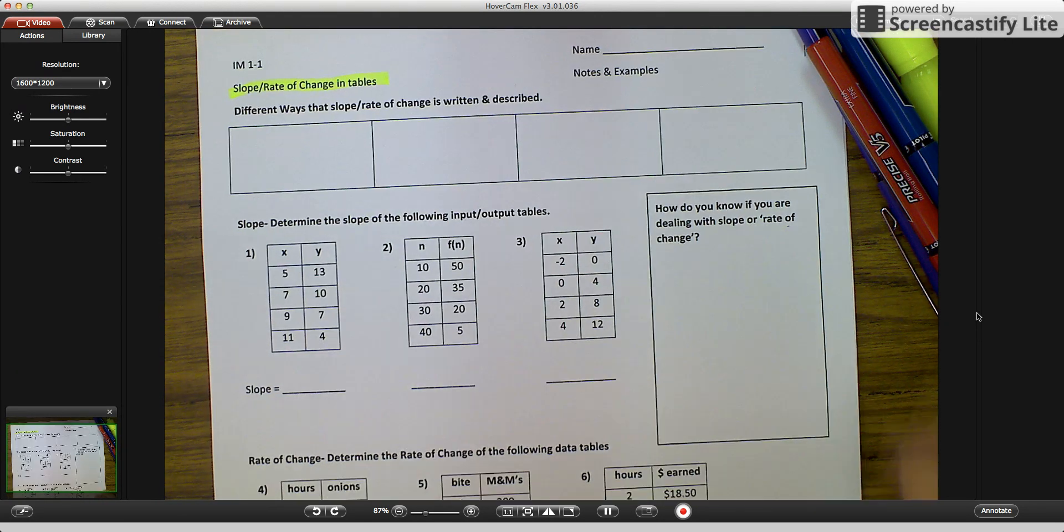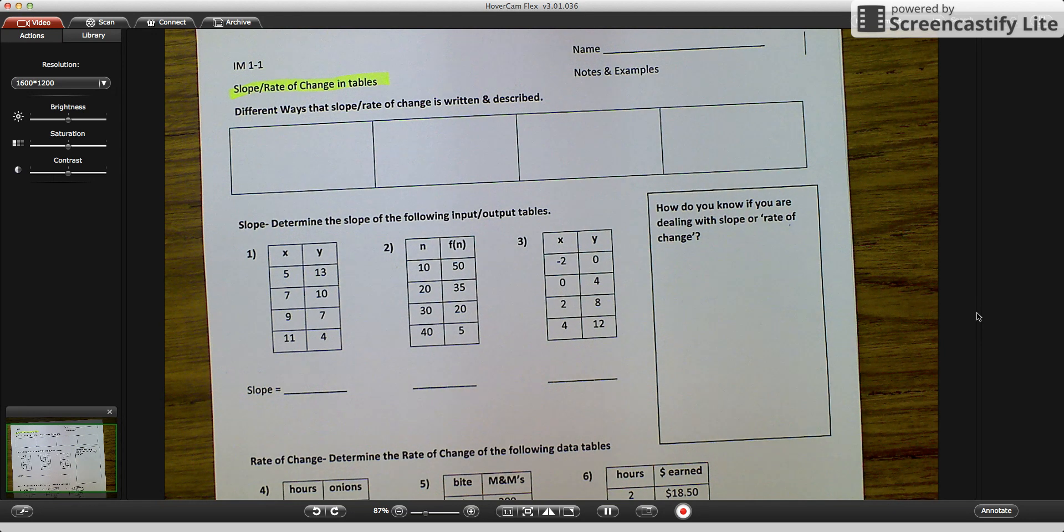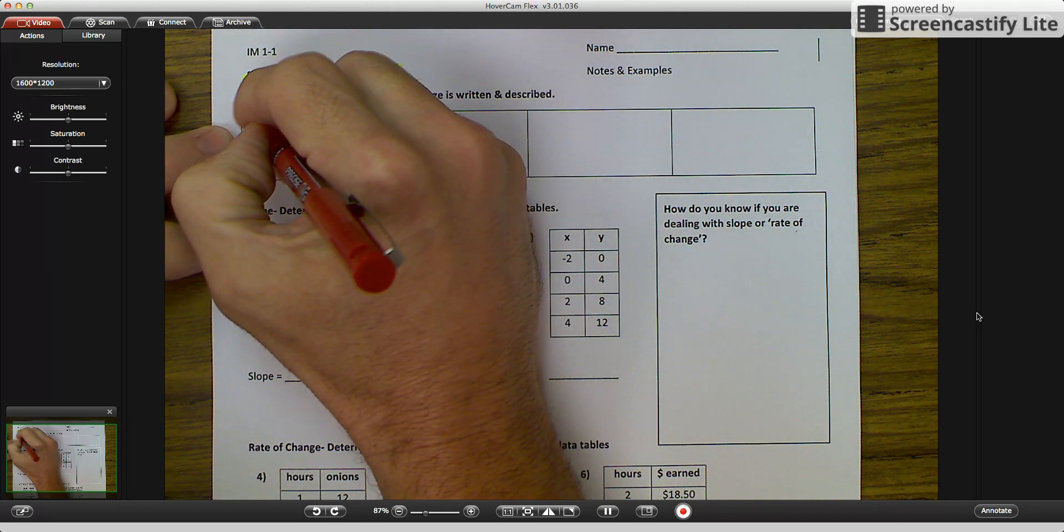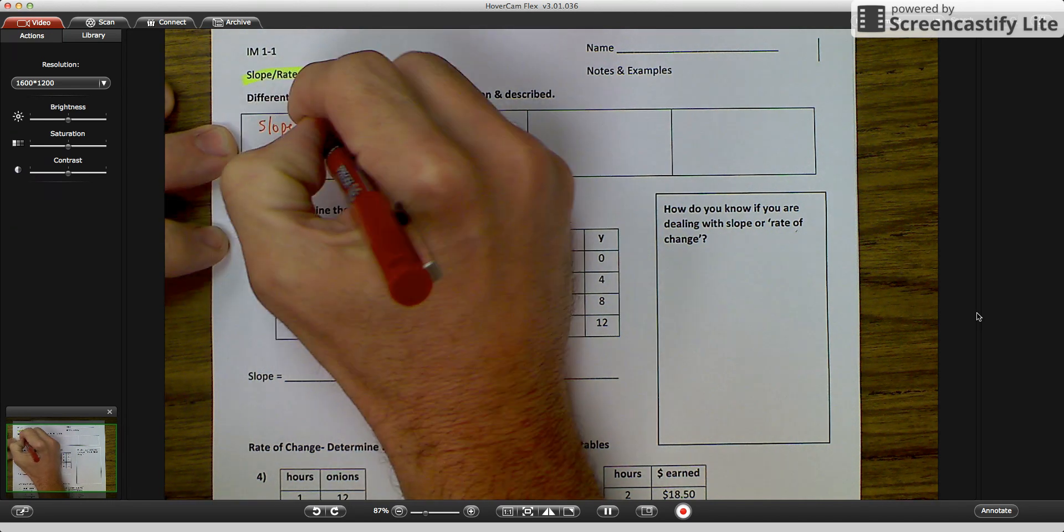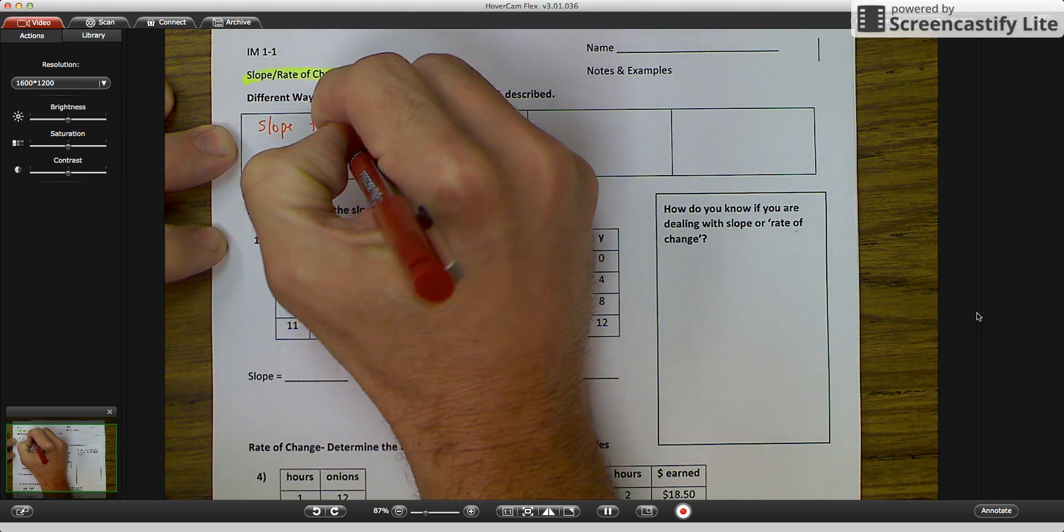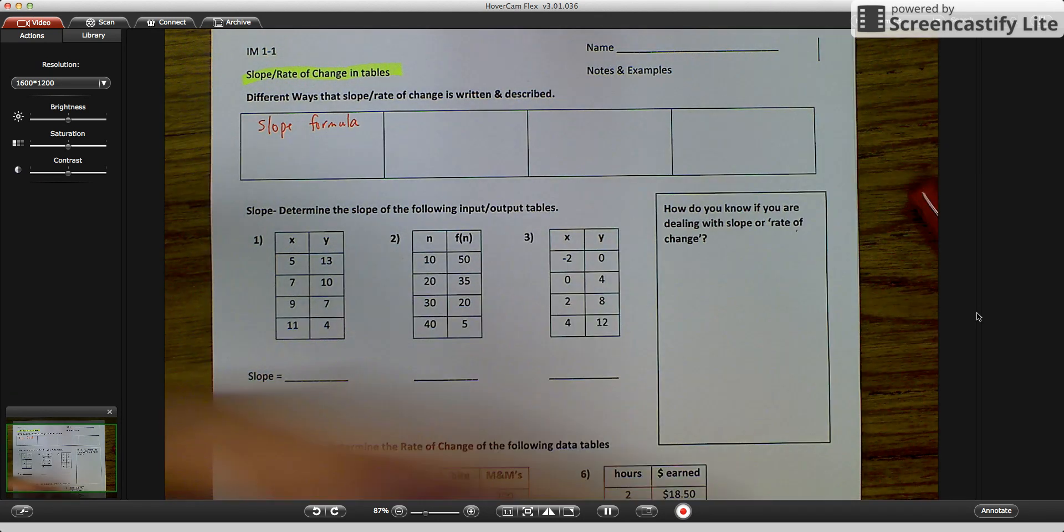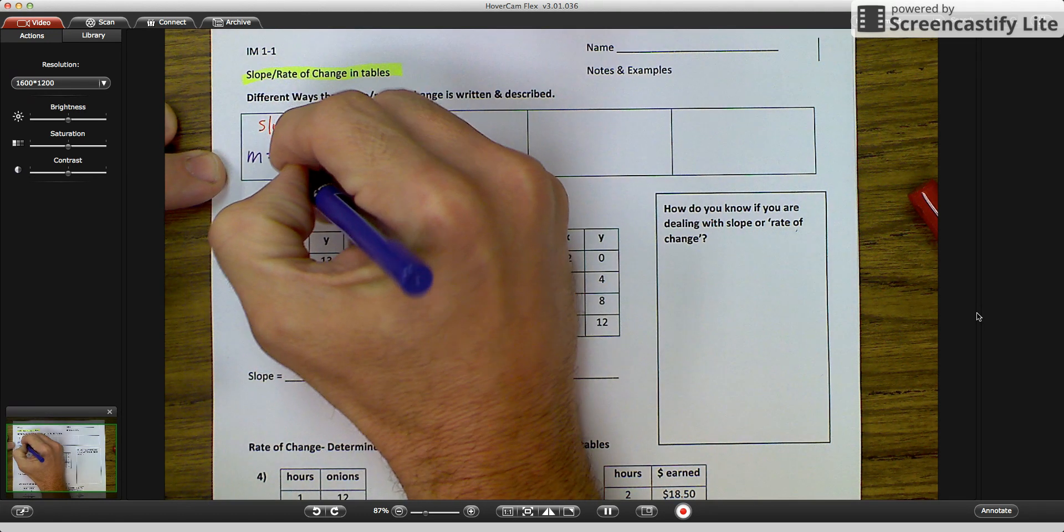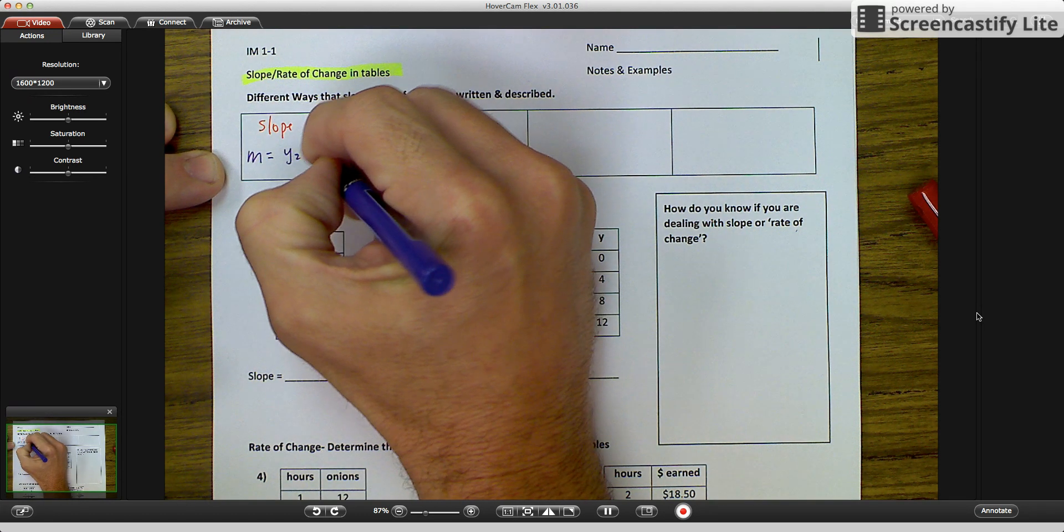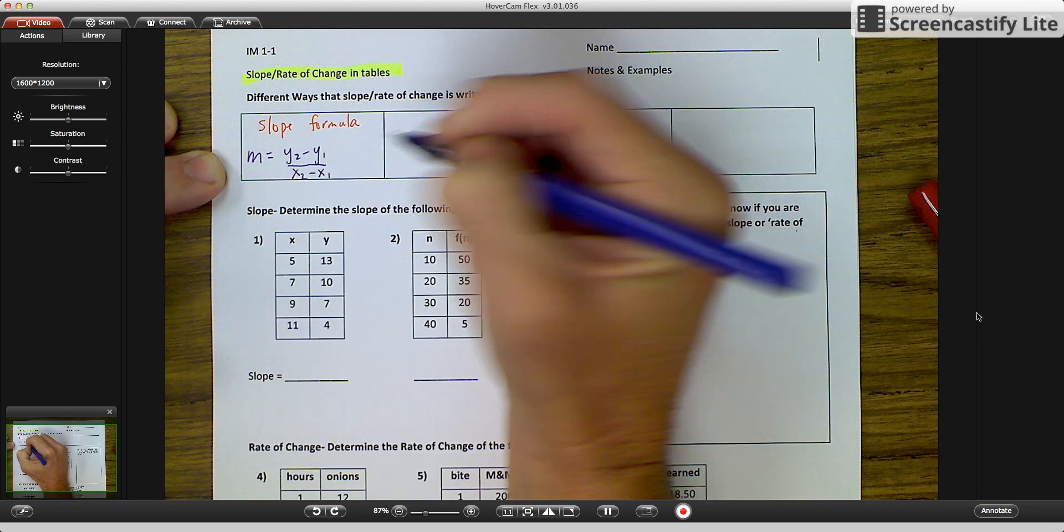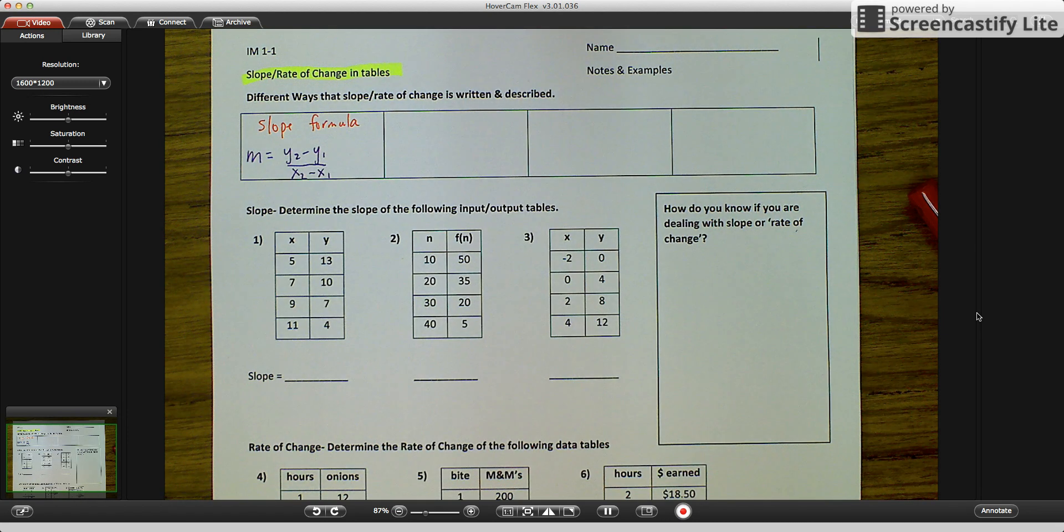Let me get my camera set up. Alright, there are many different ways that you're going to see slope and rate of change written and described. So the first way is the slope formula. And the slope formula is m equals y sub 2 minus y sub 1 over x sub 2 minus x sub 1. And everybody has heard that before, but sometimes it gets a little bit confusing.